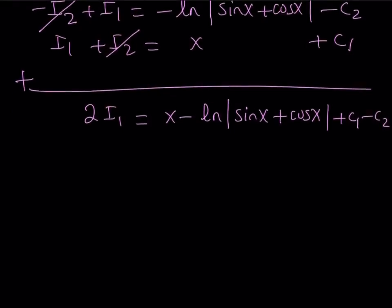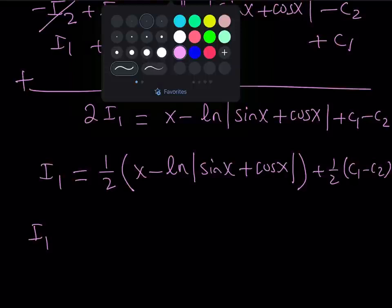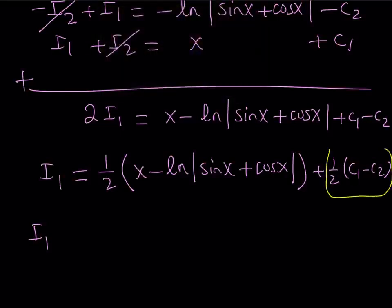So I get 2I1 equals x minus ln absolute value of sine x plus cosine x plus c1 minus c2. Since c1 and c2 are constants, we can take care of that, but let's go ahead and divide both sides by 2 first. So this is going to give me 1 half of x minus ln absolute value of sine x plus cosine x and then the rest is going to be 1 half of c1 minus c2. c1 and c2 are constants, therefore c1 minus c2 and c1 minus c2 times 1 half is also a constant.